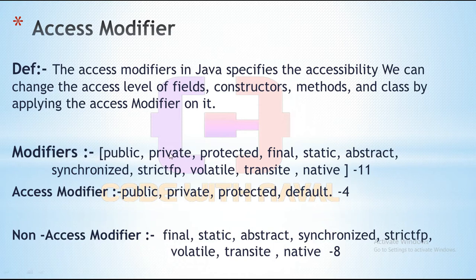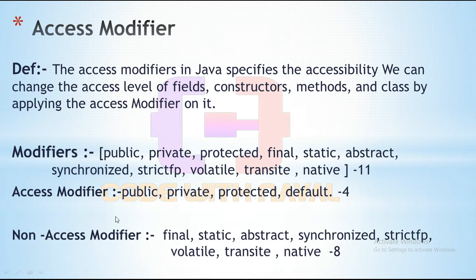If you remember, if you watched the keywords video in this series, then you saw there we have modifiers — total 11 modifiers. There we have public, private, protected, final, static, abstract, and so on. In these, we have access modifiers: 4 access modifiers and 7 other non-access modifiers. We have a total of 4 access modifiers and 8 non-access modifiers.